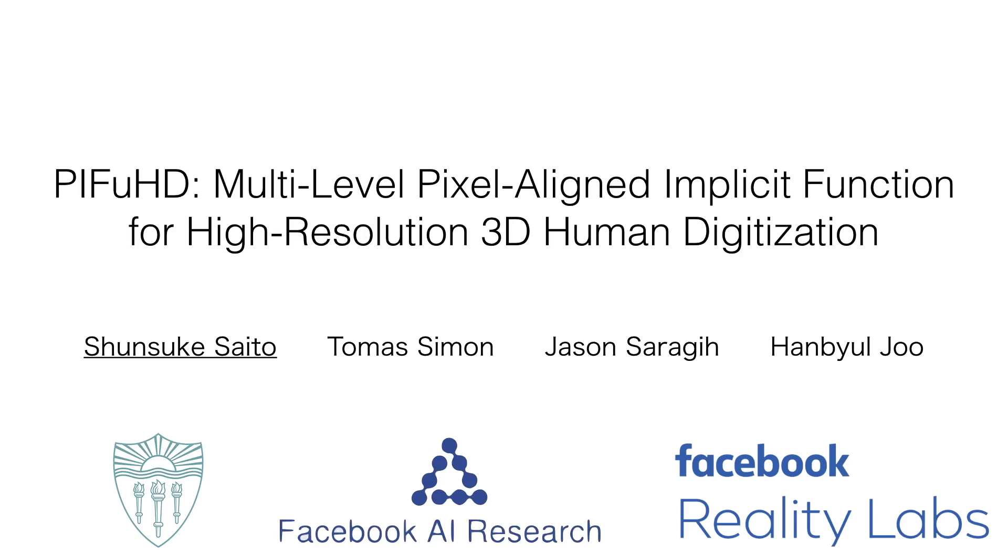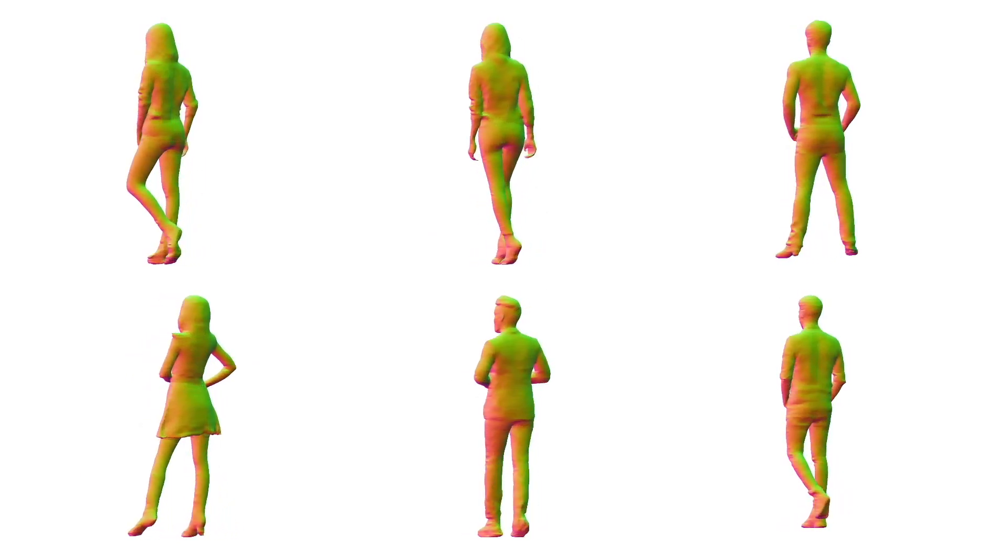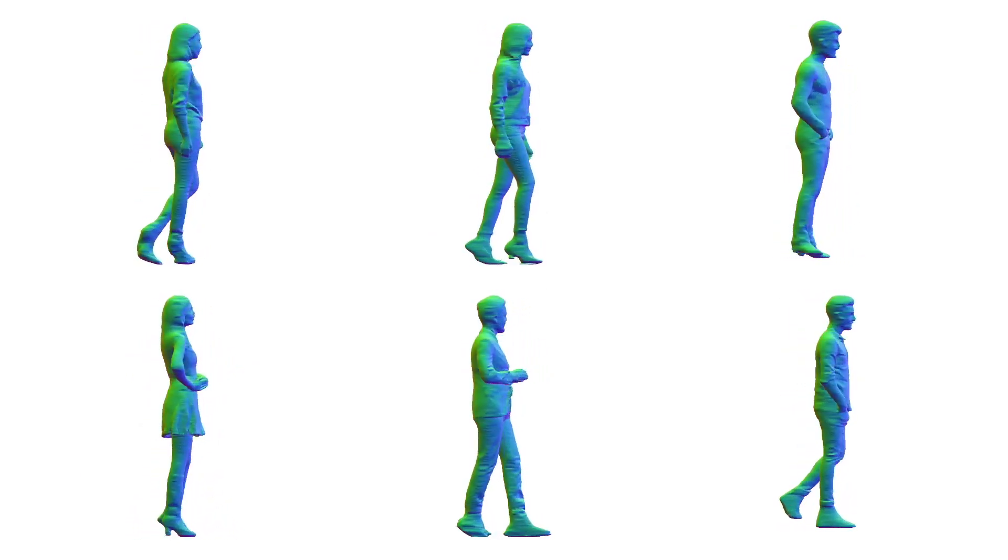In this work, we present a 3D human reconstruction framework, PyFuHD, that recovers faithful details of the person in 3D at 1K resolution from a single image fully automatically.